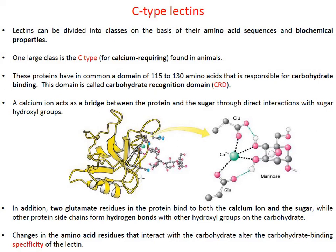The carbohydrate recognition domain binds one calcium atom, which is coordinated to amino acids of the protein — for example, two glutamic acids — through non-covalent interactions. This calcium atom is also important for non-covalent interactions with the sugar molecule, in this case mannose. There are also direct hydrogen bond interactions between the amino acid side chains and the hydroxyl groups of the sugar molecule.